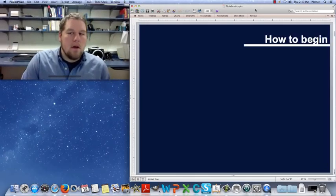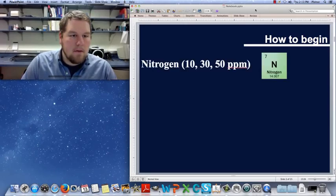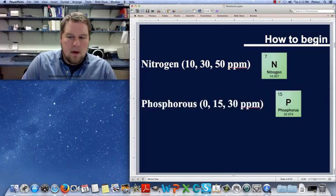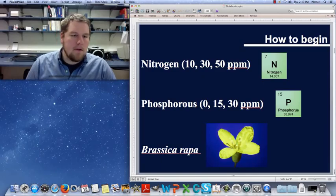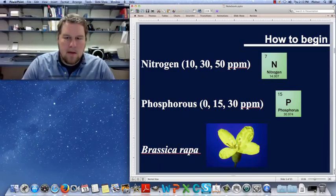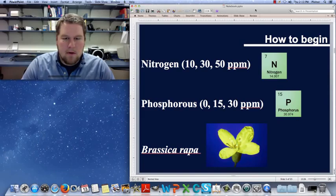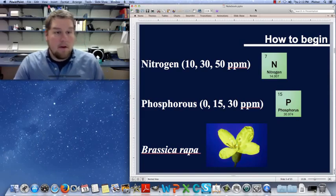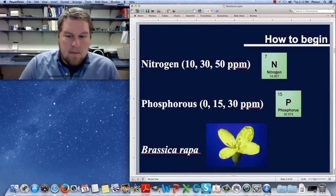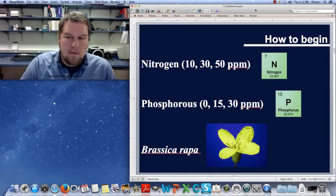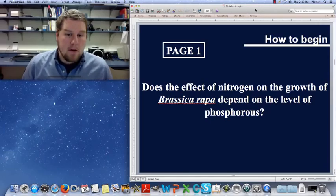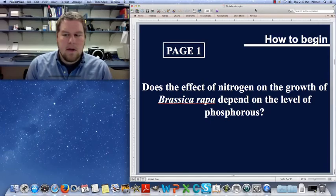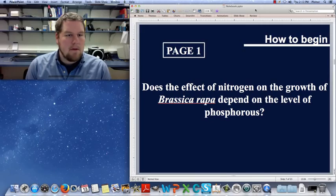How do you begin your notebook? Well, let's first start with an example of a two-way design. Let's say I had one factor, nitrogen, three levels, one factor, phosphorus, three levels as well. And I wanted to study Brassica Rapa. So how do these two factors potentially interact? Does the effect of one factor on the growth of Brassica Rapa depend on the other? Those would be kind of my questions in this experiment.